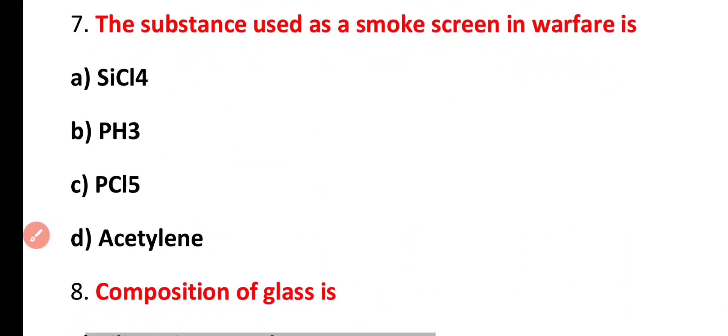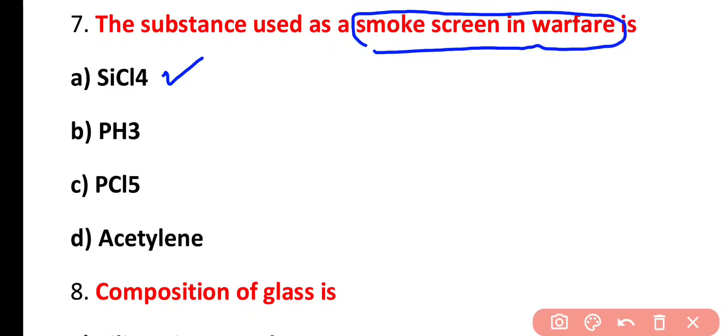Question number 7. The substance that is used as a smoke screen in warfare is SICL4, PH3, PCL5, acetylene. Correct answer is option A. Silicon tetrachloride is easily hydrolyzed and produces white fumes. That's why it is used as a smoke screen in warfare.